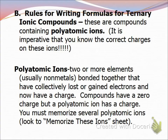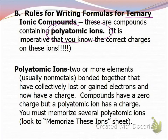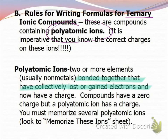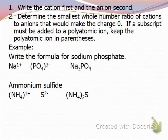Now the rules for writing ternary ionic compounds — ternary means more than two things, so we're going to include polyatomic ions. It's imperative that you know these; you'll need to memorize them. From our bonding unit, polyatomic ions are covalently bonded internally but carry a charge, so they act like an ion. Same rules as before: write the cation first and the anion second, then determine the smallest whole number ratio.